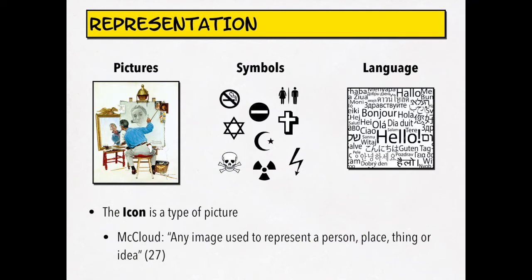The icon, he says, is a type of picture — any image used to represent a person, place, thing, or idea. Pictures visually represent the world around us. Symbols represent ideas; they're pictorial but very concise and to the point. Language can also represent the world around us, but it does so in a more abstract way.